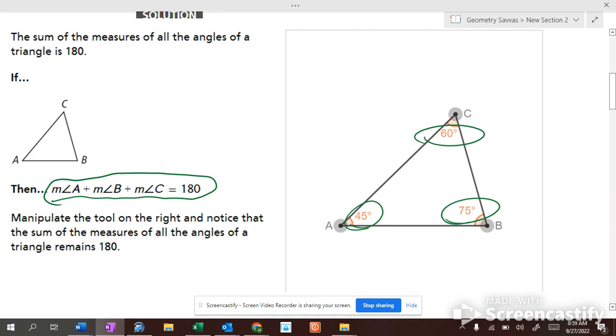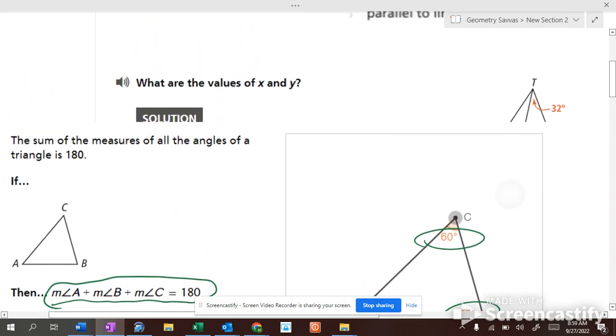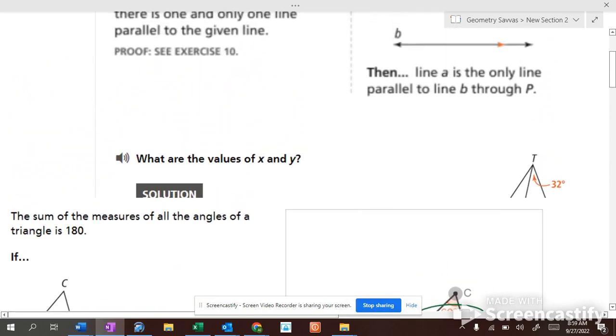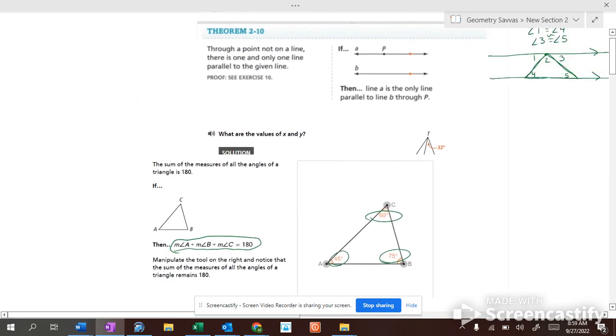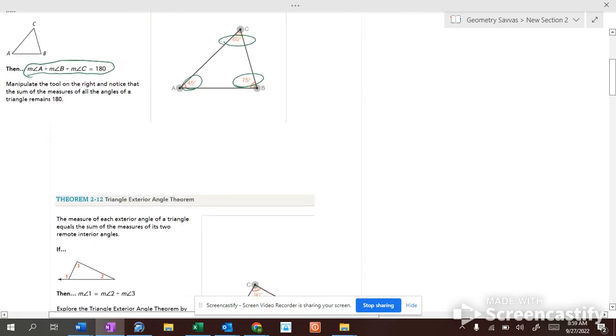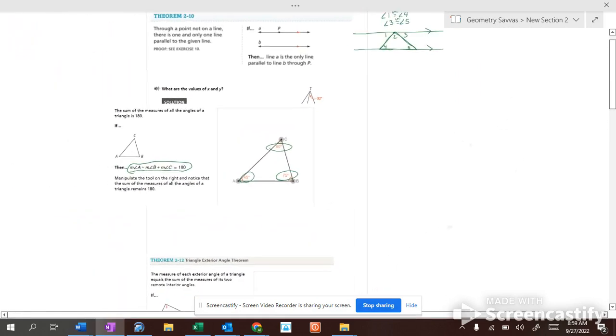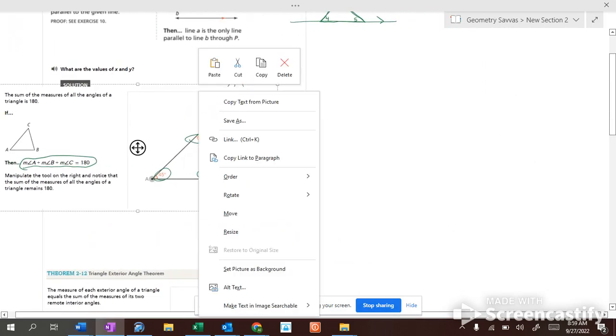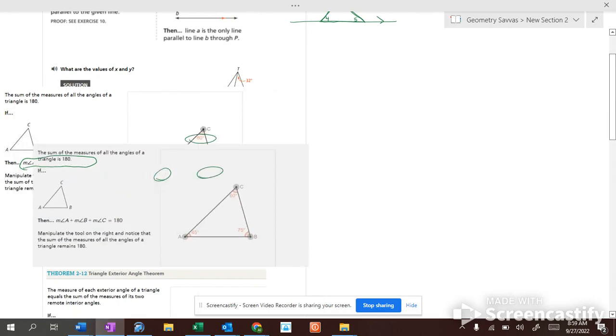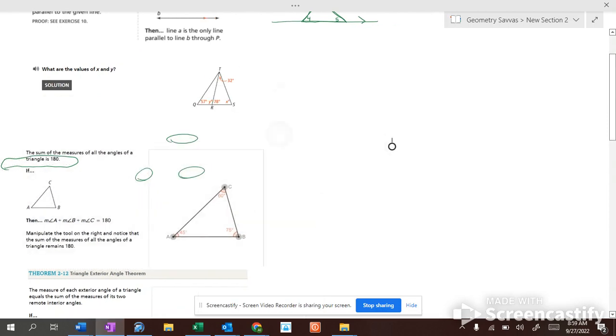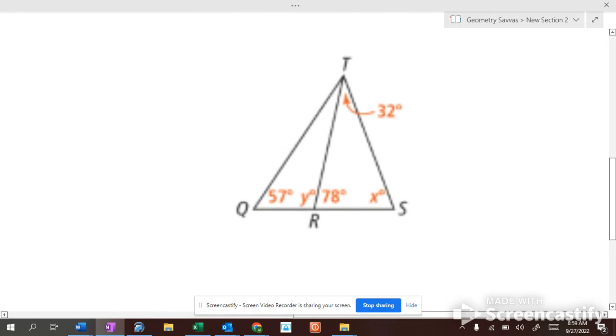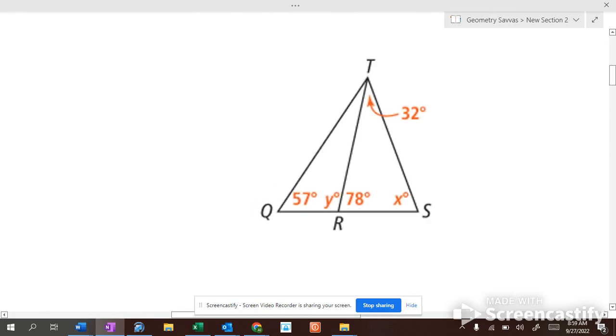All triangles, the angles add up to 180 degrees. All right, now, I don't know what happened here. Something moved on top of something. Slide this back down. There we go. So, let's figure out x and y here.